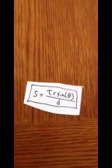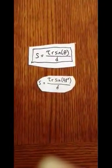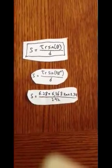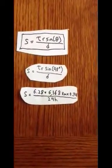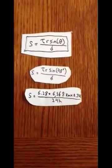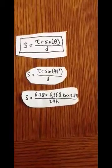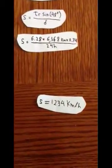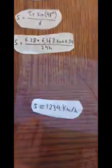And that is the formula, noting that the angle is in degrees south of the north pole. I for instance live 48 degrees south of the north pole, and if you plug it all into a formula you get 6.28 which is tau times 6,368 kilometers which is the radius of the earth times 0.74 which is the sine of 48 degrees all over 24 hours, which would equal 1,234 kilometers per hour at where I live.